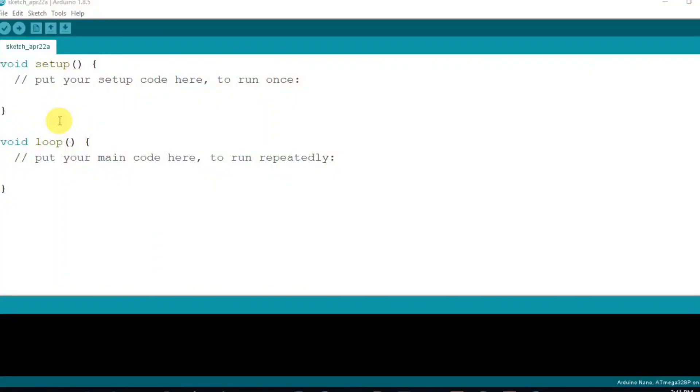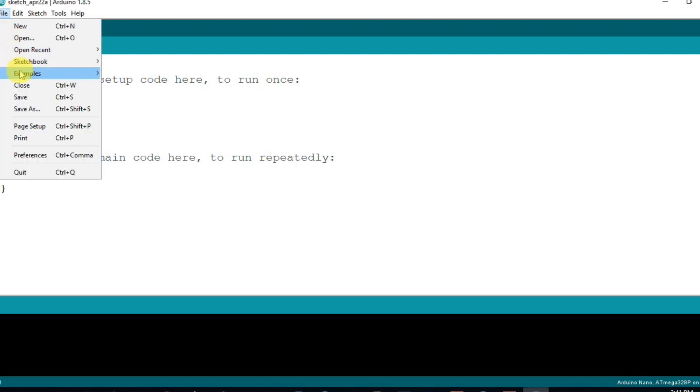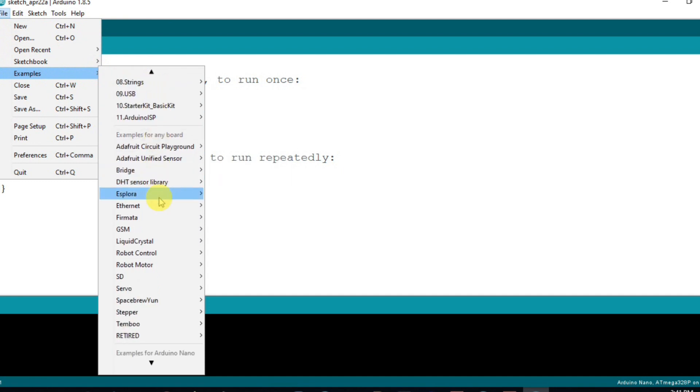Now, let's see how to program the LCD display. Arduino IDE has an inbuilt LCD library with some examples. So no need for external library for LCD. First of all, click on File option, then go to the example and find the liquid crystal library and open the hello world example.